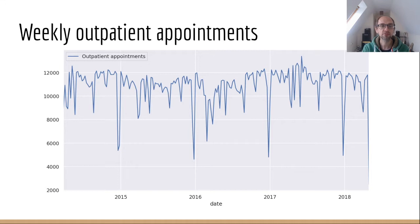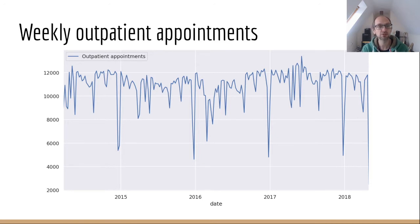We can see here we've got a weekly number of outpatient appointments. Each of these figures is recorded on a weekly basis. We can see that it runs from 2014 through to sometime in 2018. On the y-axis, we've got the number of appointments that are occurring.